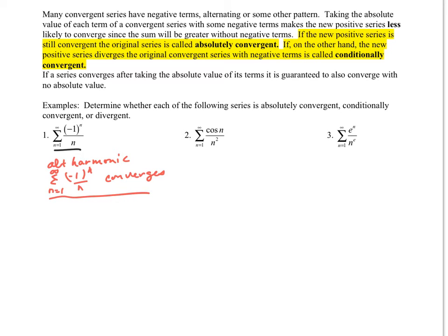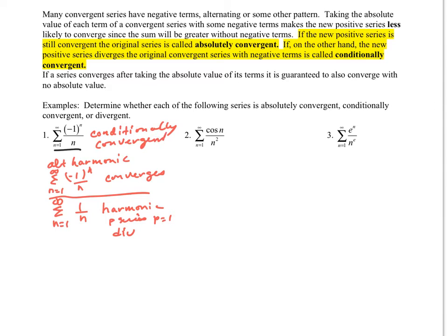Now, if I look at all the absolute value terms — so n equals 1 to infinity of 1 over n — this is a harmonic series. It's a p-series with p equal to 1, so this one will diverge. What does that mean overall? That means overall that my original series is conditionally convergent, because the one with the negative values converges but the one with all the positive terms does not.